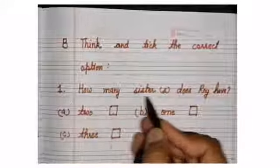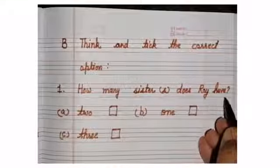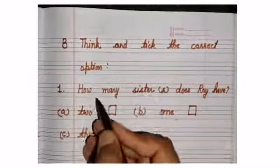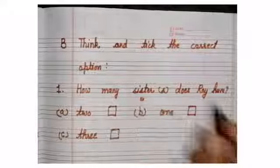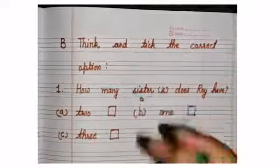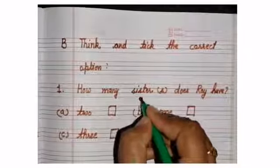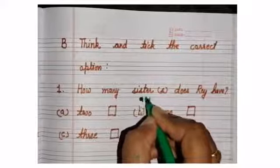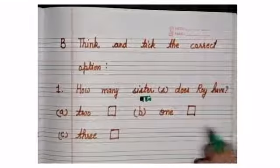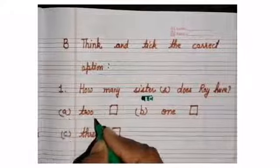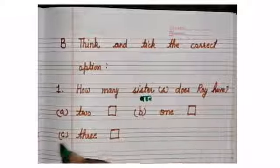Number 1, How many sisters does Roy have? Roy ki kitni behen hai? Sister is behen. Roy ki kitni behen hai? Option A, 2. Option B, 1. And option C, 3.